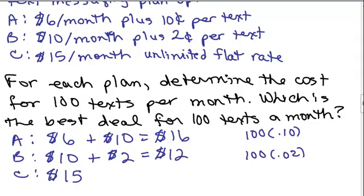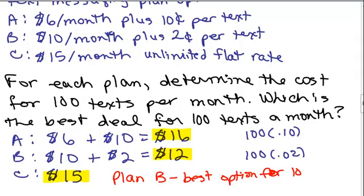Those are our different amounts that we would pay depending on what plan. We'd pay $16 if we were on Plan A, $12 on Plan B, or $15 on Plan C. What's the better plan if I happen to use 100 texts? The cheapest plan, Plan B. Plan B best option for 100 texts.